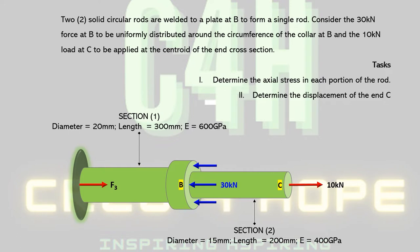So let's look at this problem. The problem states that two solid circular rods are welded to a plate B — that's rod 1 and rod 2 — welded to this flange over here at point B, to form a single rod. Consider the 30 kN force at B to be uniformly distributed around the circumference of the collar at B, and the 10 kN load at C to be applied at the centroid of the cross section, as shown in the diagram.